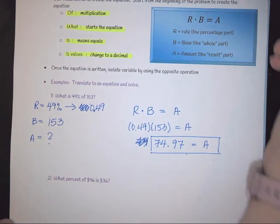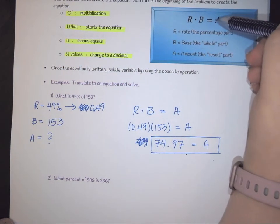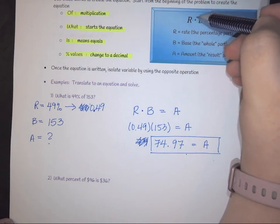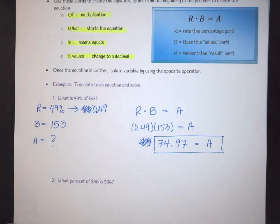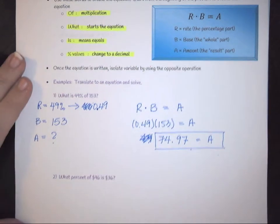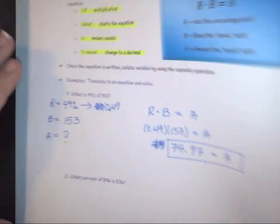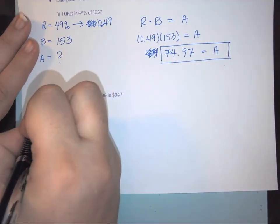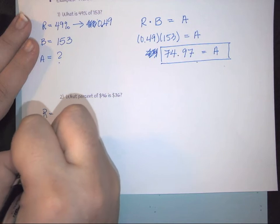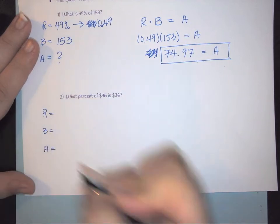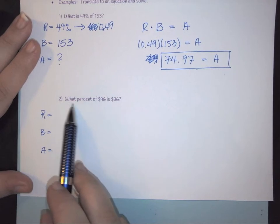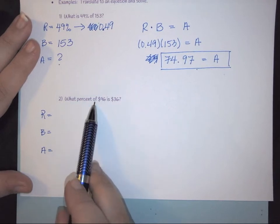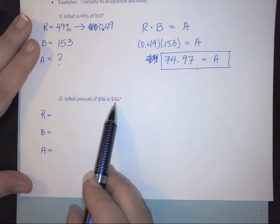Okay, so if you look at it, the equation equal sign is is, the multiplication sign is of, and so essentially that's how we would rewrite the problem. All right, let's look at another one. And again, we have R, B, and A. And we need to see what pieces we have in our problem. So what percent of 96 is 36?